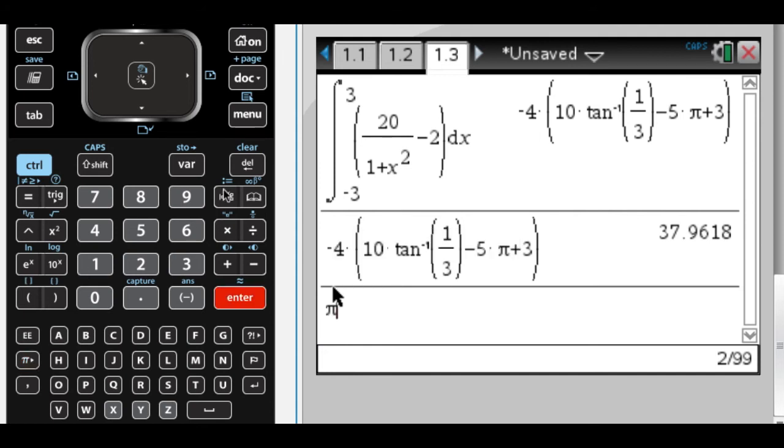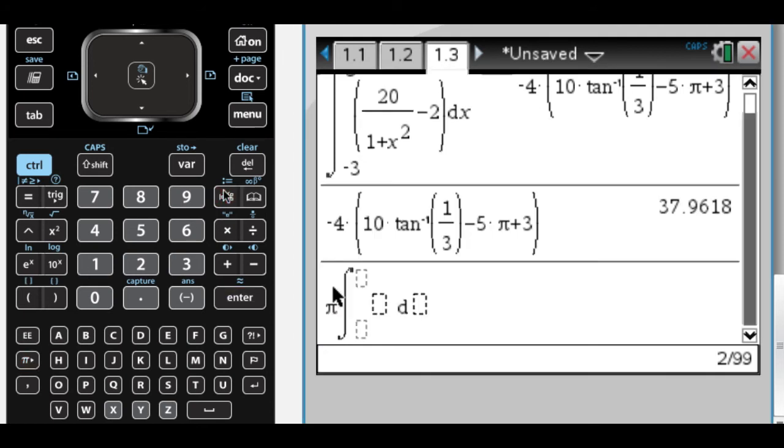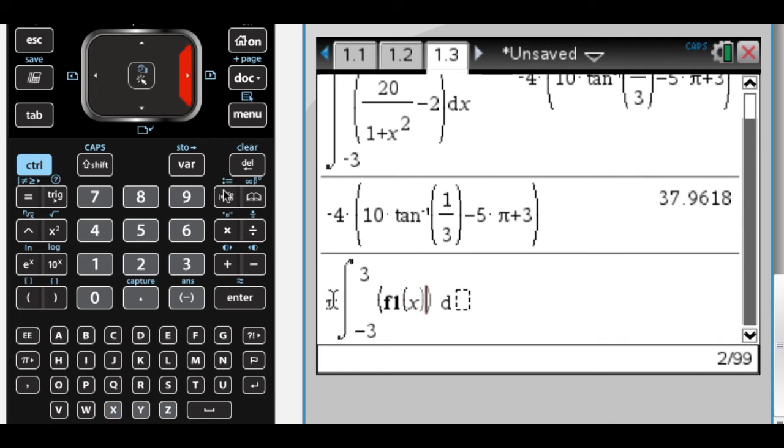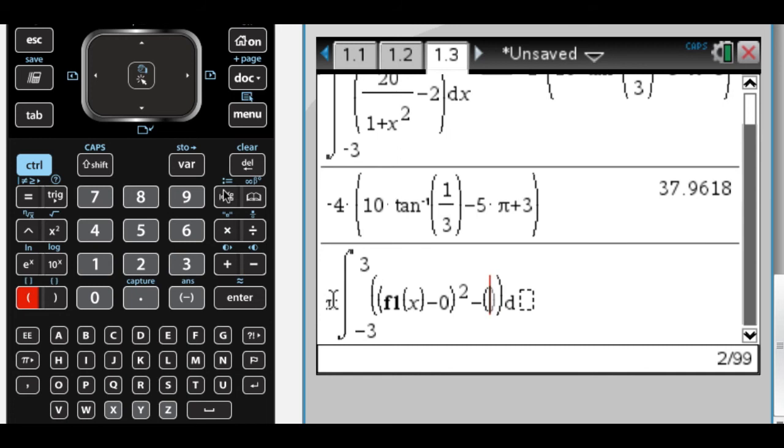So it's going to be pi, and then the integral from negative 3 to 3, and then it's outer minus axis. So I actually have that stored in F1. So F1 minus 0. I always write that in, even though it's not necessary. And then minus, and then F2 minus 0 squared. So make sure you do outer minus axis, square it, then inner minus axis, and square it. Don't screw up where you square it part, because that costs you all the points.